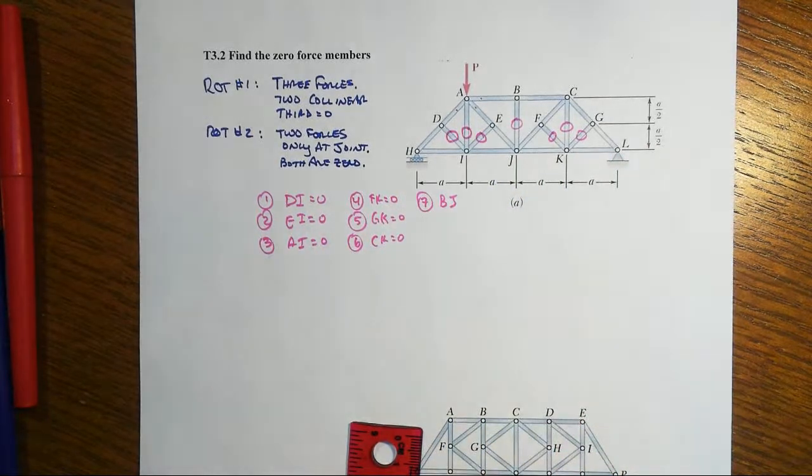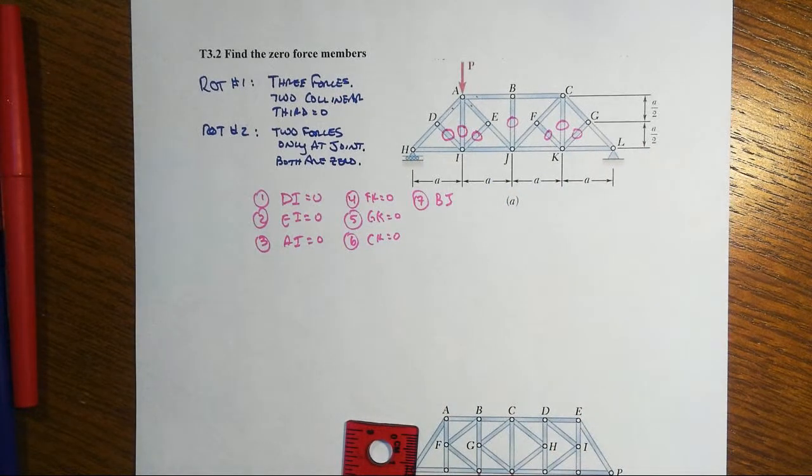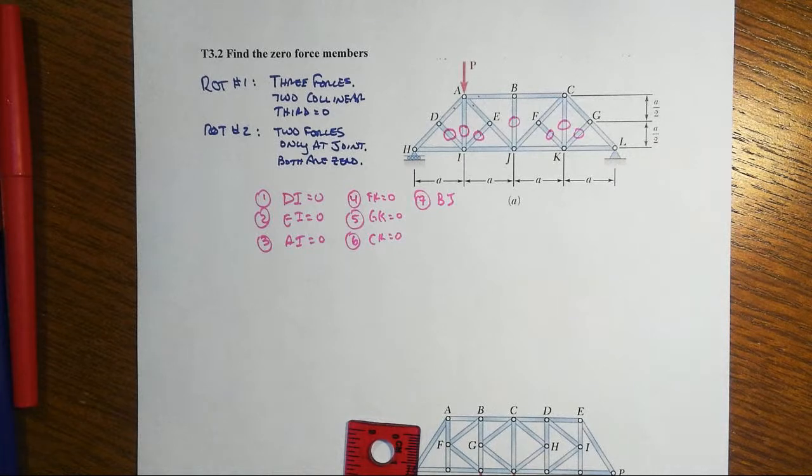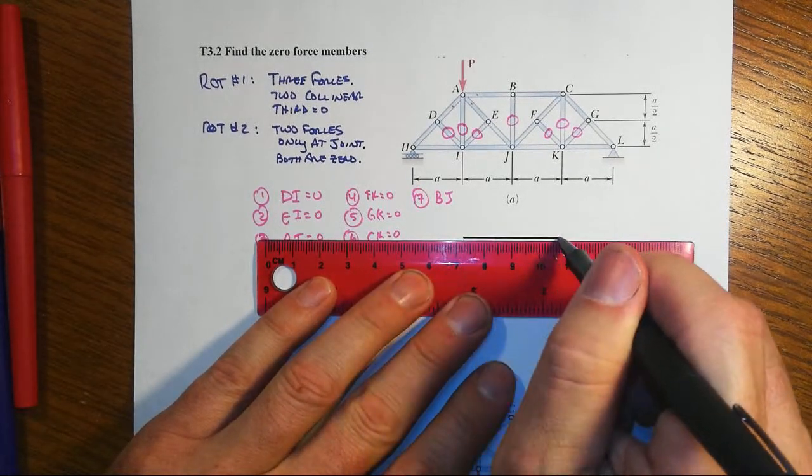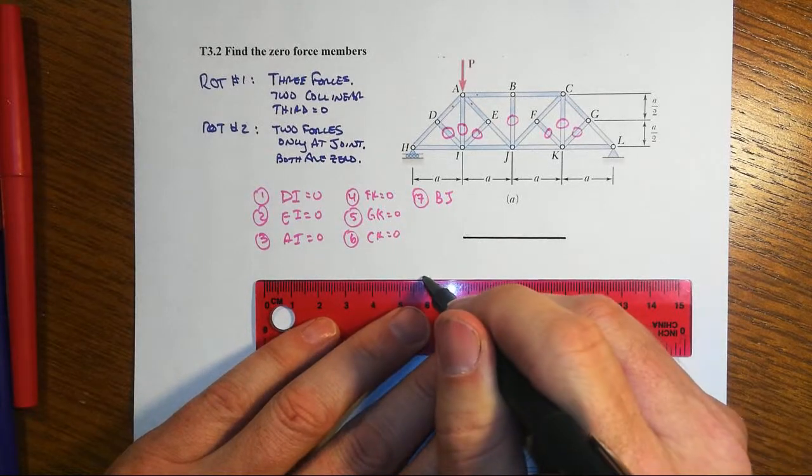Now, before we go, I want to do one thing here. If we've got zero force members, then in a sense, we could remove them, and we still have a stable structure. Let's see if that were the case.